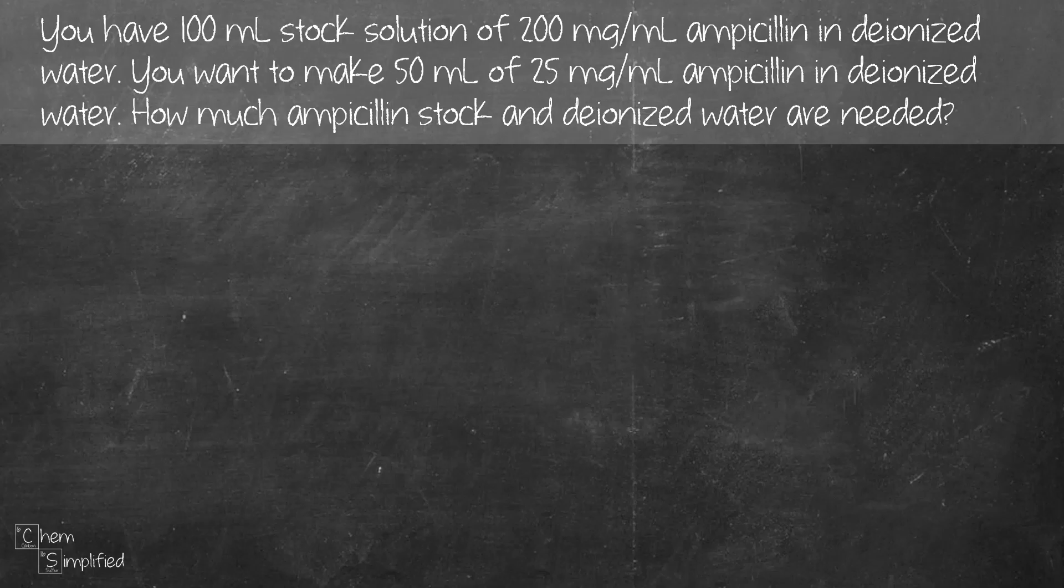We're given this question where we have 100 ml of stock solution that has a concentration of 200 mg per ml of ampicillin in deionized water. We want to make 50 ml of 25 mg per ml of ampicillin in deionized water. So how much ampicillin and deionized water are needed?